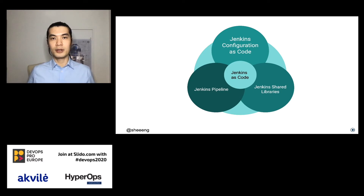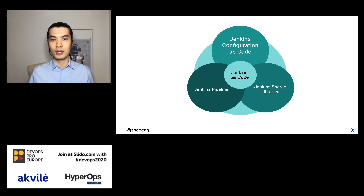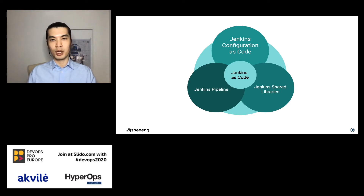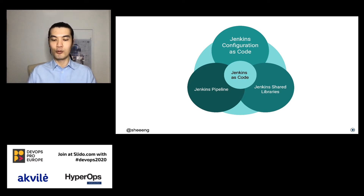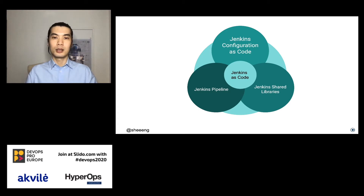The first main pillar of Jenkins as Code is definitely Jenkins Configuration as Code. A bit of history: this project was started a few years back when CloudBees and Praqma combined forces to build it. As a result, there is a plugin that can be loaded by Jenkins, enabling Jenkins to read all these configurations as code from text files and populate all these settings inside the application.